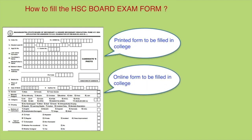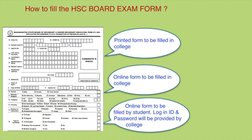First, colleges will call you in small slots. You will be given a printed form where you fill in all your details, stick your photo, and submit it at the college. Then the college will do the further proceedings — fill all data online and pay the fees on your behalf based on the details you provided. Second, they can call you to the college for online form filling — if they have a computer lab, they will ask you to fill in your details directly, so your board form will be filled online, but they will call you to college for this.